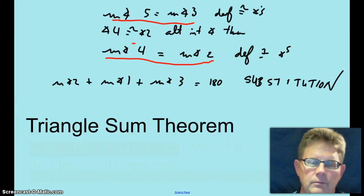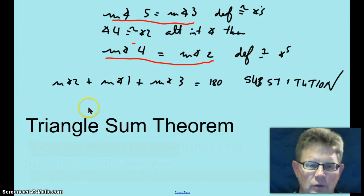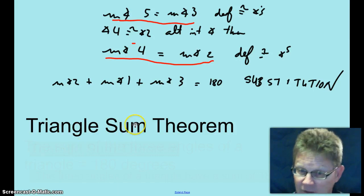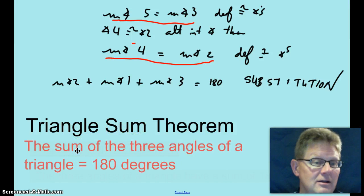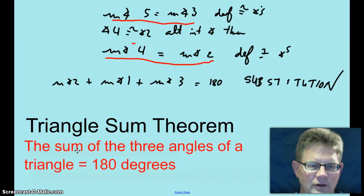That is the Triangle Sum Theorem — that the three angles of a triangle add up to 180. The sum of the three angles of a triangle equals 180 degrees.